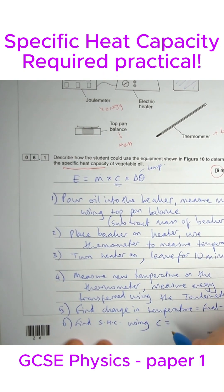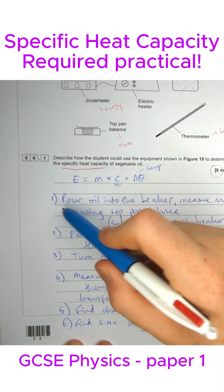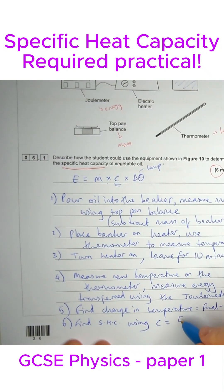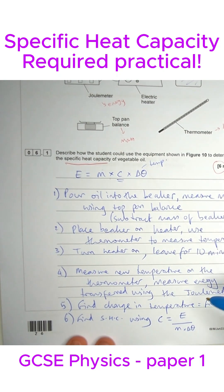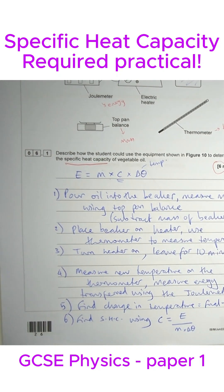Rearranging the equation for specific heat capacity, I need to get mass and temperature onto the other side, so I've got to divide them. Energy divided by mass times by temperature change - that's all you need to do for that question. You mentioned every piece of equipment, you mentioned the equation.